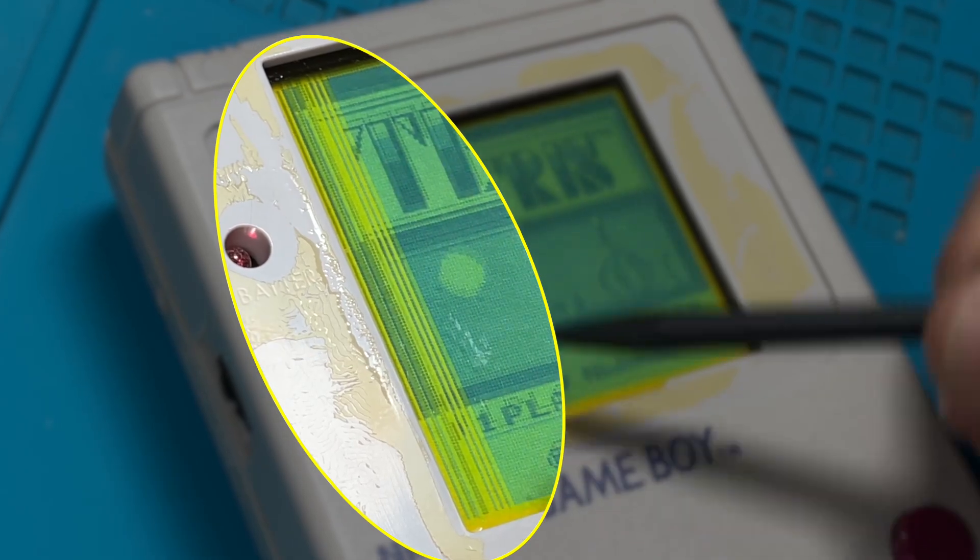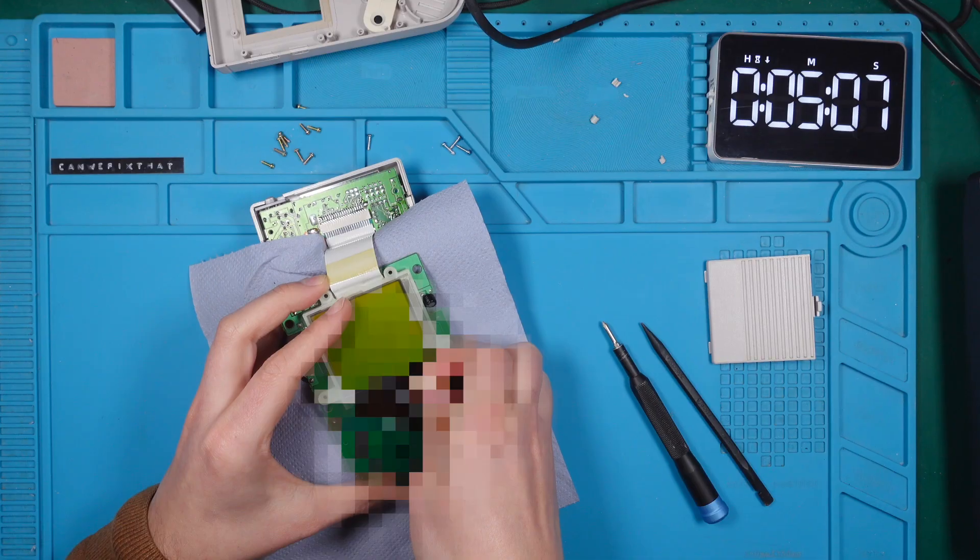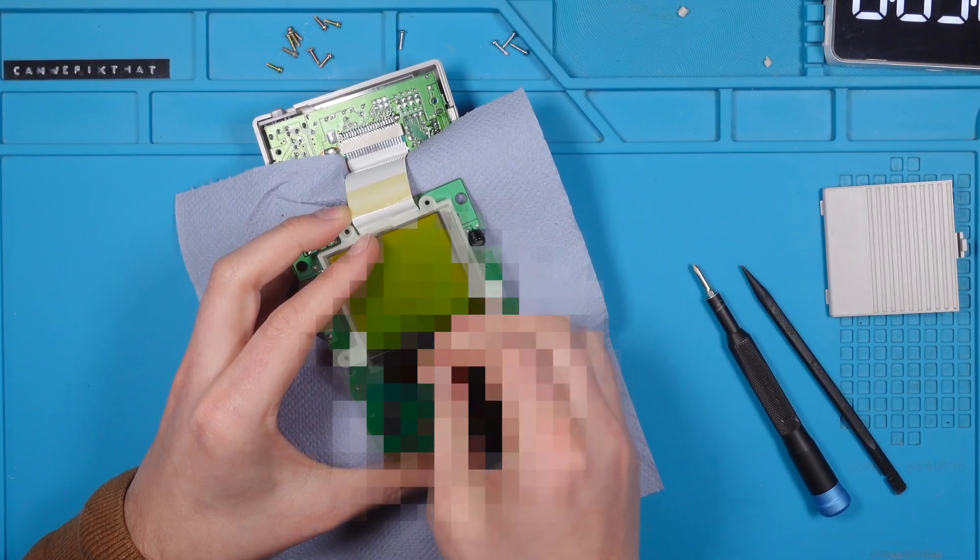Have you ever wondered why almost every classic Game Boy looks like this? Turns out it's a really common problem that affects all of them sooner or later. In this episode we're going to look into what exactly happens to our beloved Game Boys and why every one of them is affected. We will also see if there's an easy fix to get them up and running again. Let's have a look, shall we?